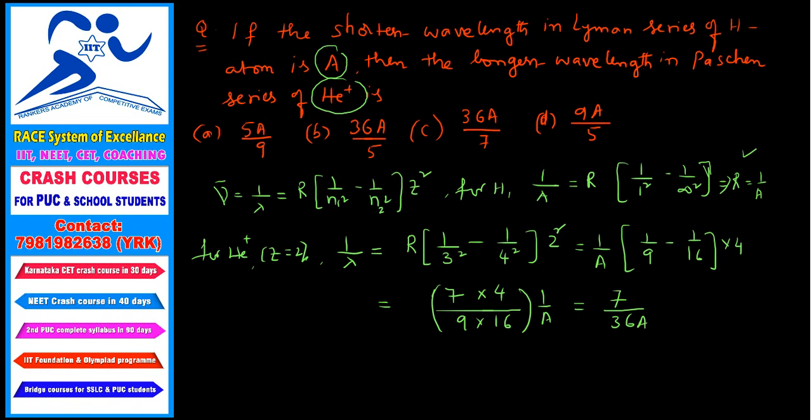Which one? 1 by lambda. Therefore in the Paschen series for longest wavelength, lambda equals 36 A by 7. So 36 A by 7 is option C. That is the right option.